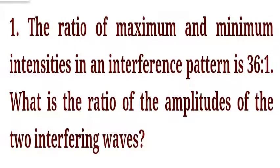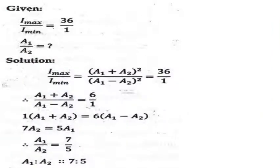The ratio of maximum and minimum intensities in an interference pattern is 36 to 1. What is the ratio of the amplitudes of the two interfering waves? Given that the ratio of maximum to minimum intensity is 36 to 1.